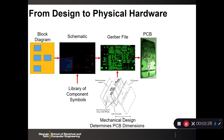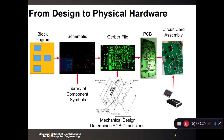The fabricator uses the Gerber file to fabricate a printed circuit board and gives that back to you. You then take your individual components, solder them to that PCB, and you now have a circuit card assembly that should perform the functions defined from the initial block diagram.